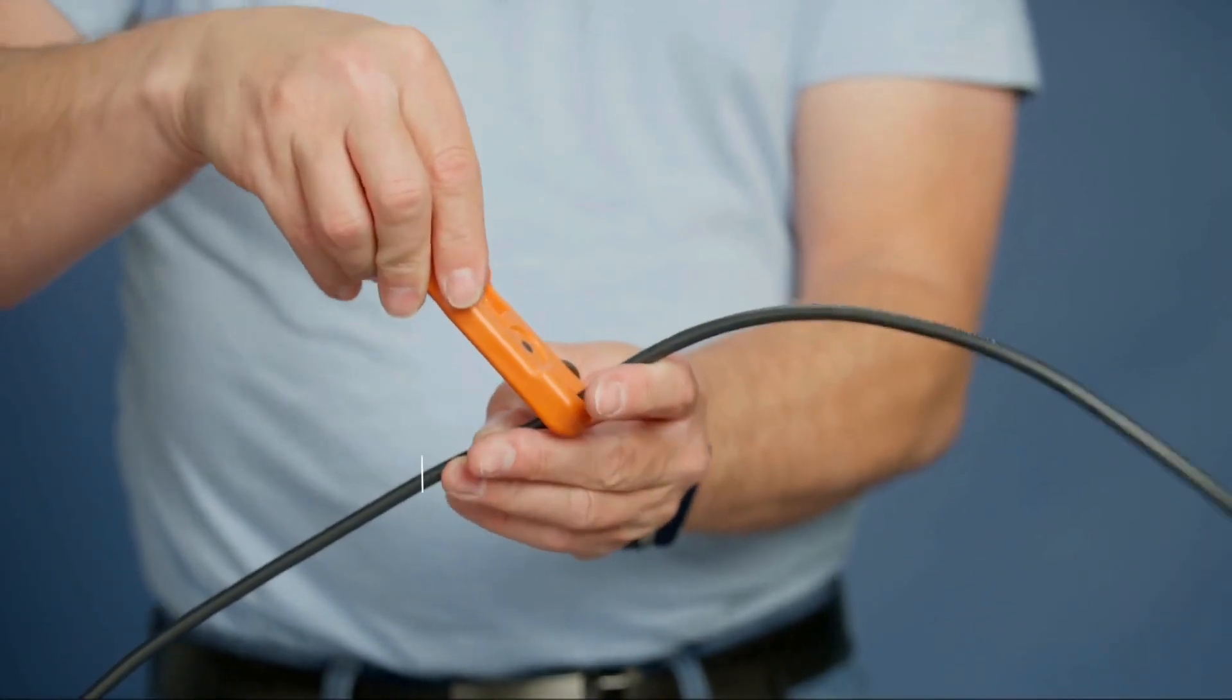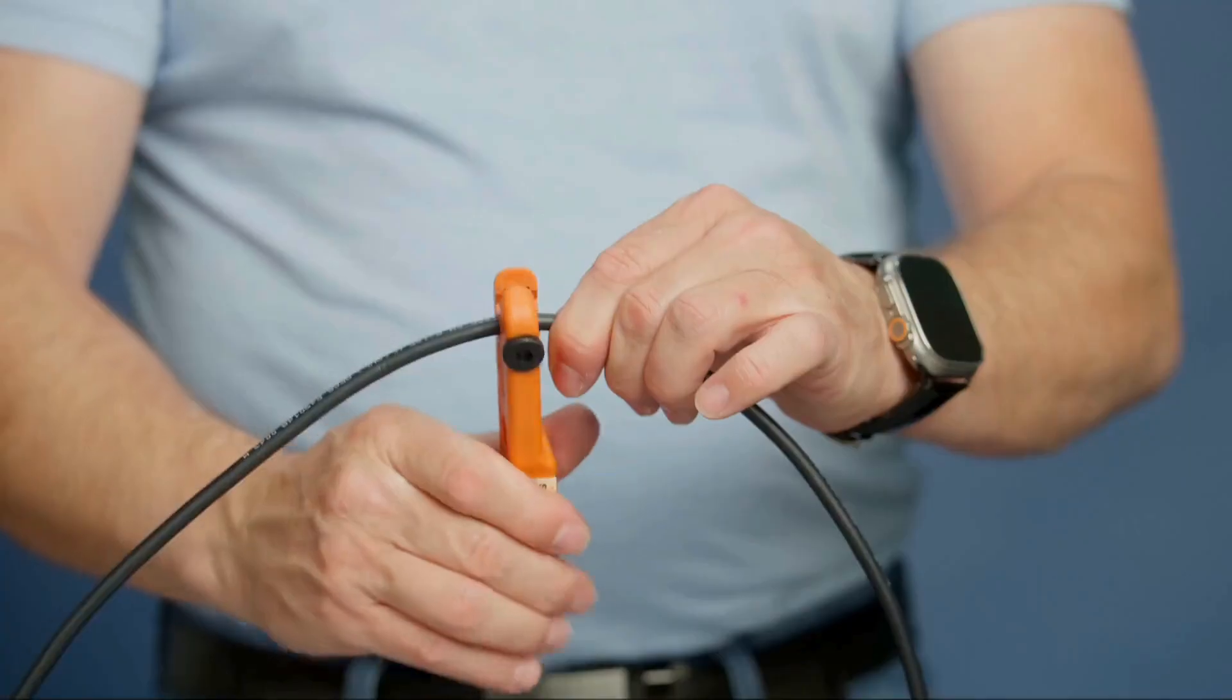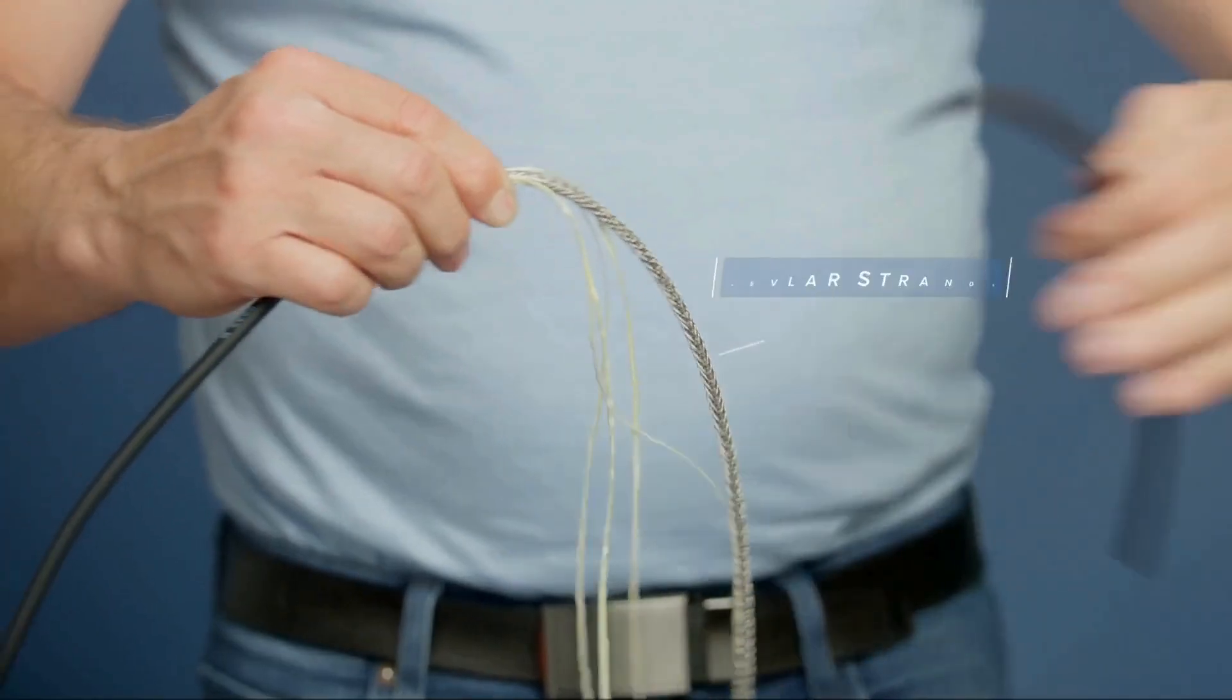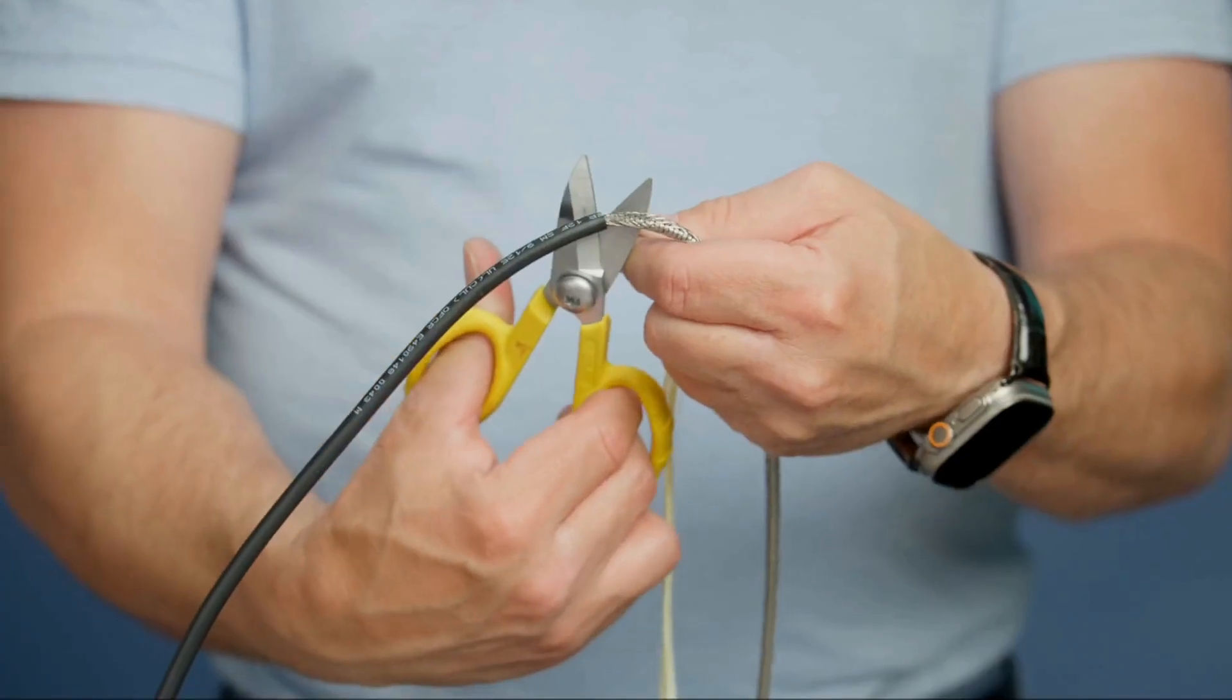Take your cable jacket stripper and place it over the outer jacket. Rotate it 360 degrees, scoring the outer jacket, then remove the outer jacket. Next you'll see a layer of Kevlar. Take your snips and cut off the Kevlar.